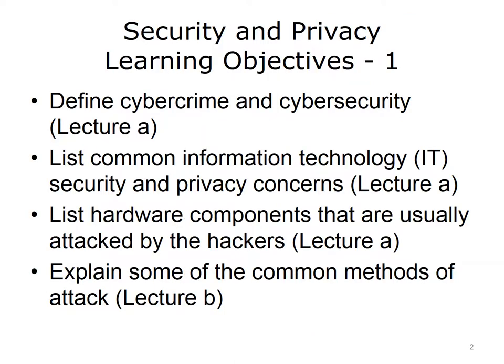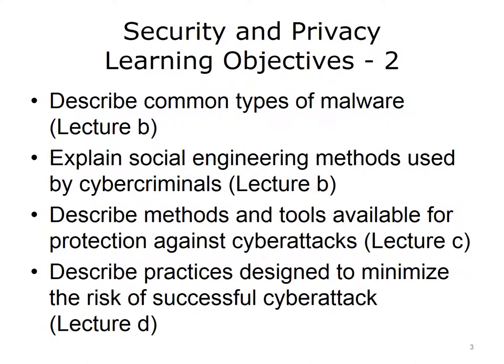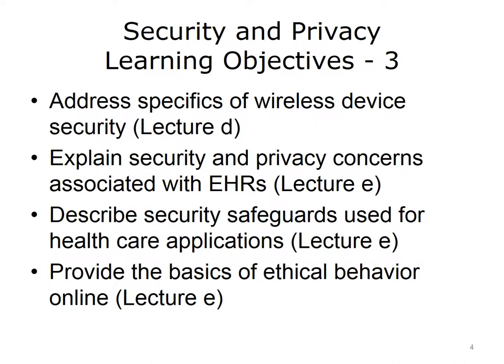The objectives for this unit, Security and Privacy, are to: define cybercrime and cybersecurity; list common information technology (IT) security and privacy concerns; list the hardware components that are usually attacked by hackers; explain some of the common methods of attack; describe common types of malware; explain social engineering methods used by cybercriminals; describe methods and tools available for protection against cyberattacks; describe practices designed to minimize the risk of successful cyberattack; address specifics of wireless device security; explain security and privacy concerns associated with electronic health records (EHRs); describe security safeguards used for healthcare applications; and provide the basics of ethical behavior online.